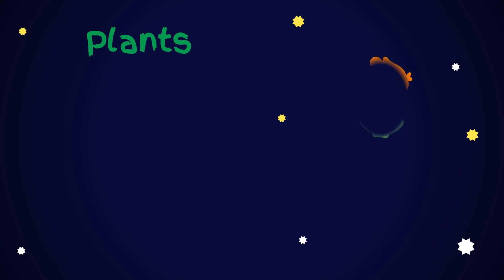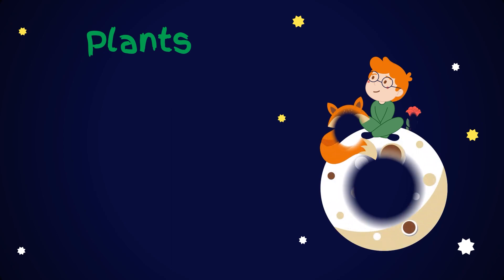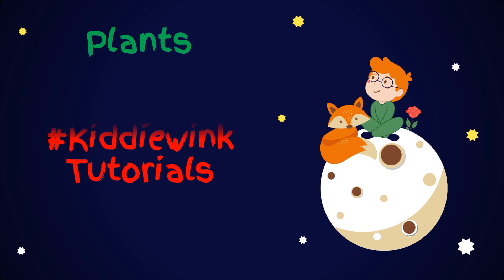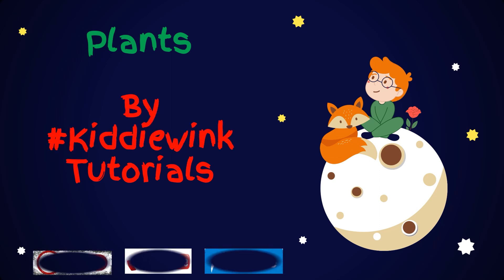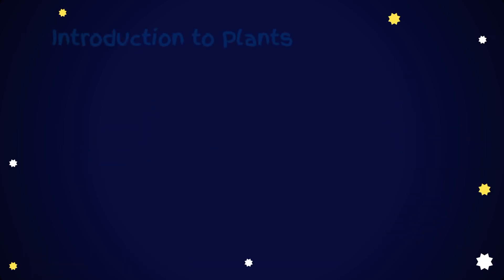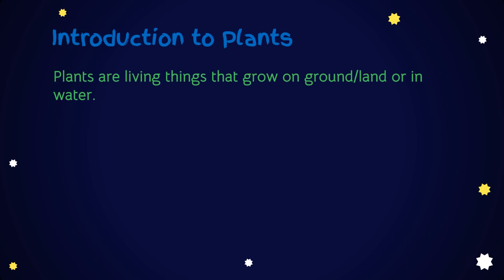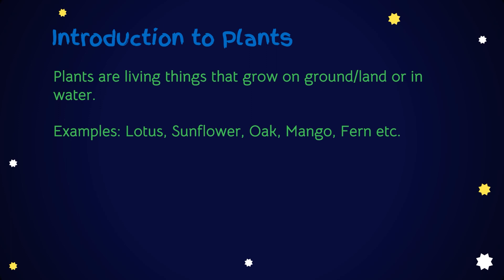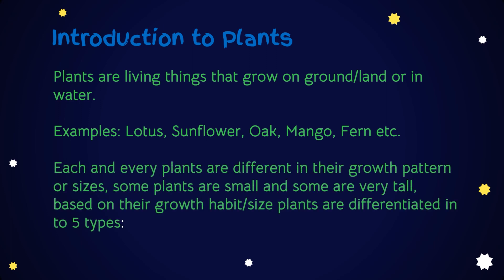Today we will discuss about different types of plants based on their growth habit or size. Plants are living things that grow on ground or in water. For examples: Lotus, Sunflower, Oak, Mango, Fern etc. Each and every plant is different in their growth pattern or size. Some plants are small and some are very tall. Based on their growth habit or size, plants are differentiated into five types: Herbs, Shrubs, Trees, Climbers and Creepers.